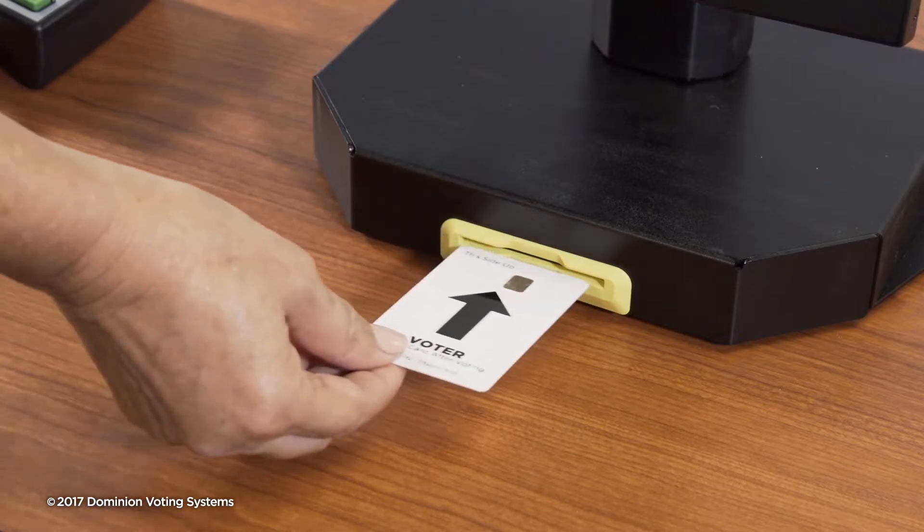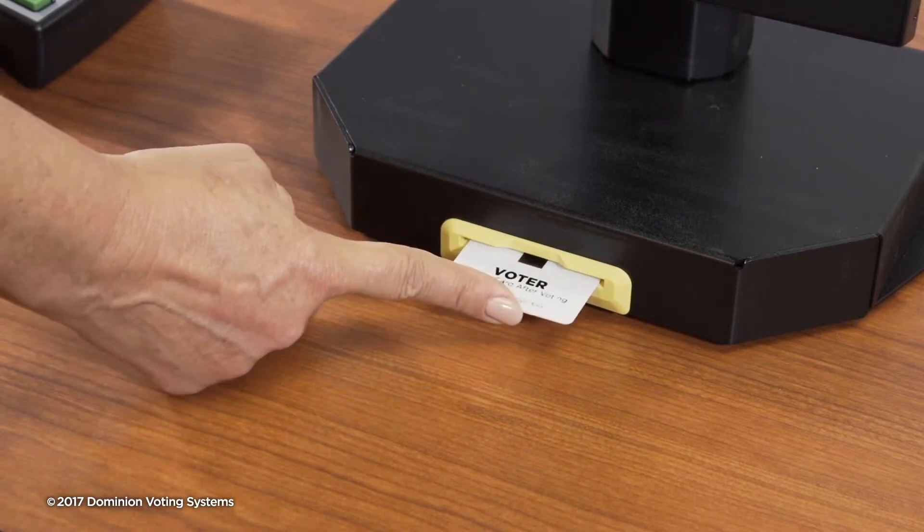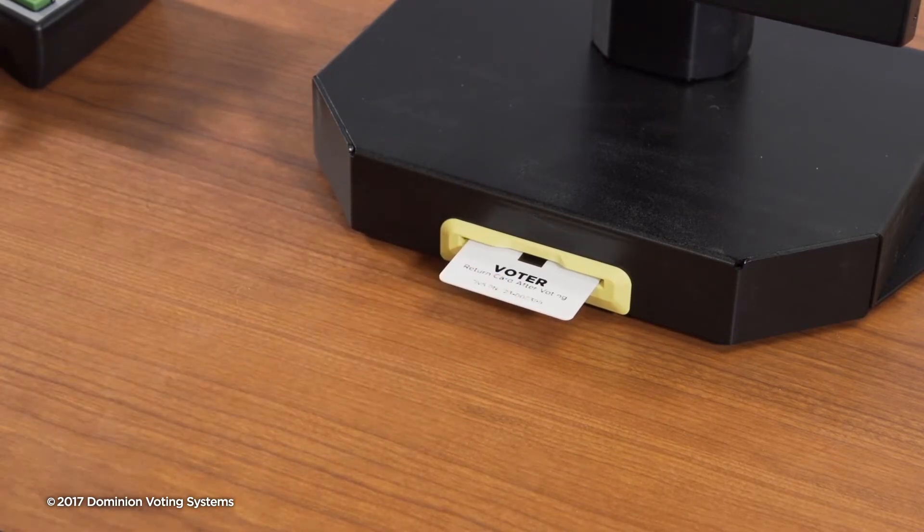To begin a voting session, the voter will insert their activated voter card with the smart chip facing up. The voter card must remain in the reader during the voting session.